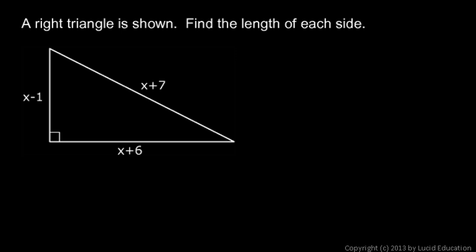Here's an example that ends up involving some interesting algebra. We're given a right triangle, and the sides are all given in terms of x. We don't know the length of this side, but we know it's x minus 1, and this side is x plus 6, and the hypotenuse is x plus 7.